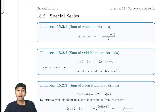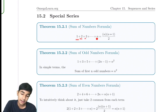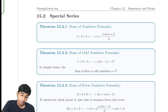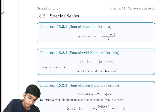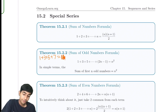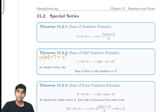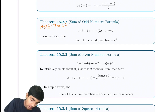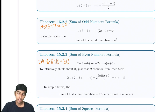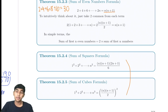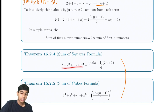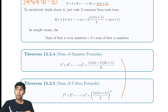Here are some cool special formulas worth remembering. The sum of 1 plus 2 plus 3 up to n is n times (n plus 1) divided by 2. The sum of the first n odd numbers is n squared — for example, the sum of the first 4 odd numbers is 16. The sum of the first n even numbers is n times (n plus 1) — for example, 2 plus 4 plus 6 plus 8 plus 10 has 5 terms, so it's 5 times 6 equals 30. There are also formulas for the sum of first n squares and n cubes, which are less critical for AMC-8 but good to know.